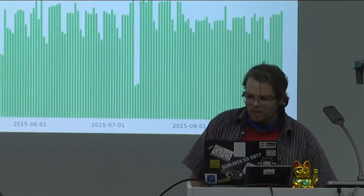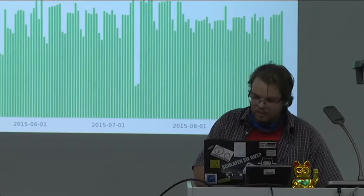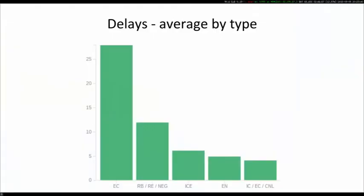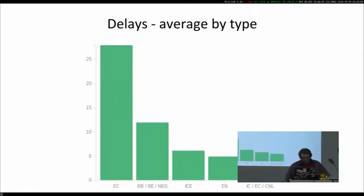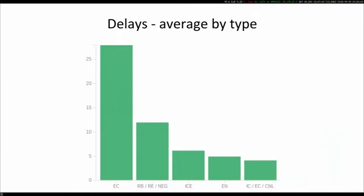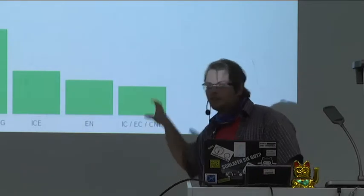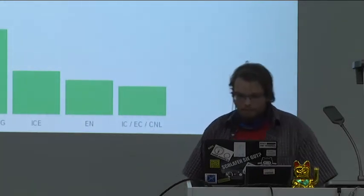We also sorted by train type to look at delays per train category over a year. Interestingly, ECs come in at around 27 minutes on average. ICEs don't do that badly. RBs probably mix in other product classes. This was covered in more detail in the previous talk since we don't have the exact product class breakdown — we can only classify this way.